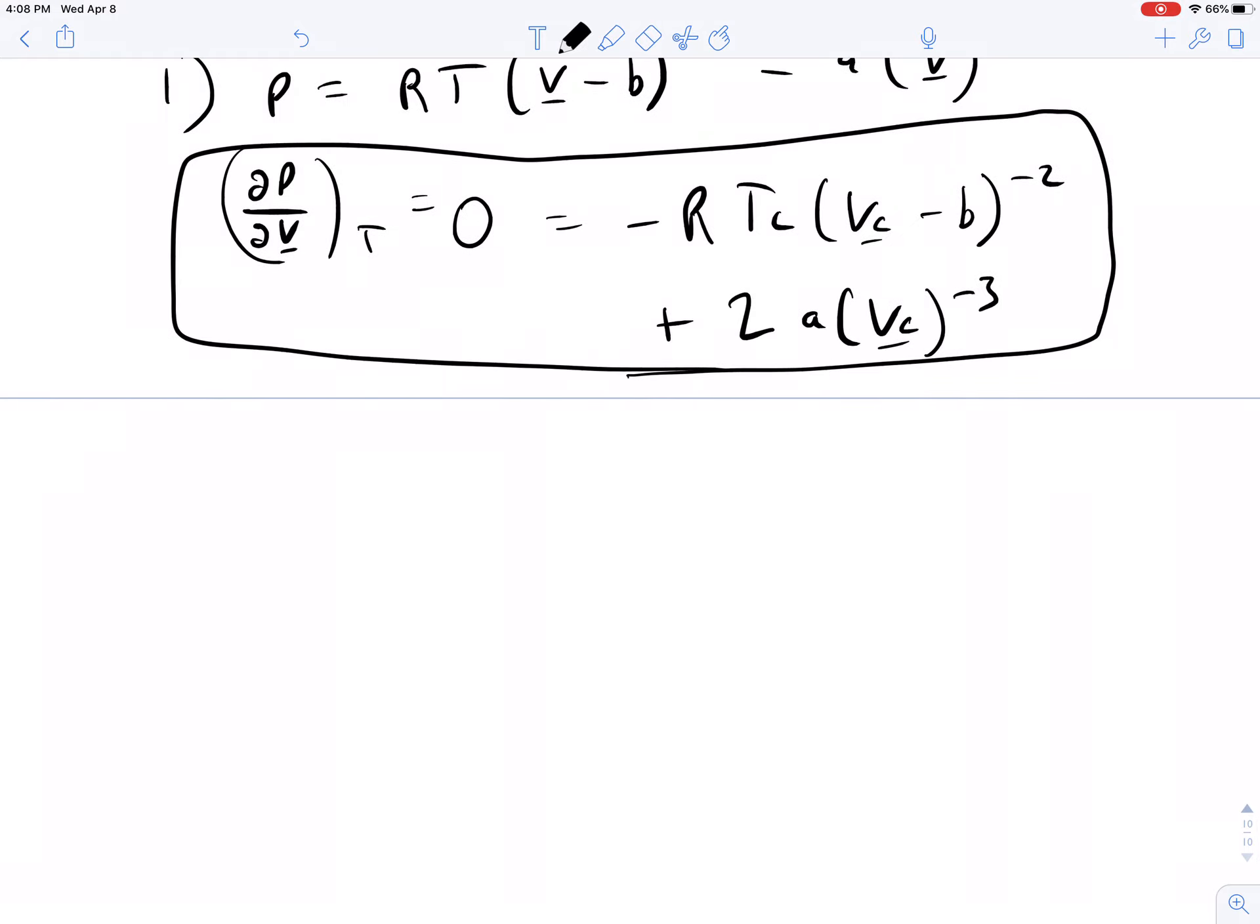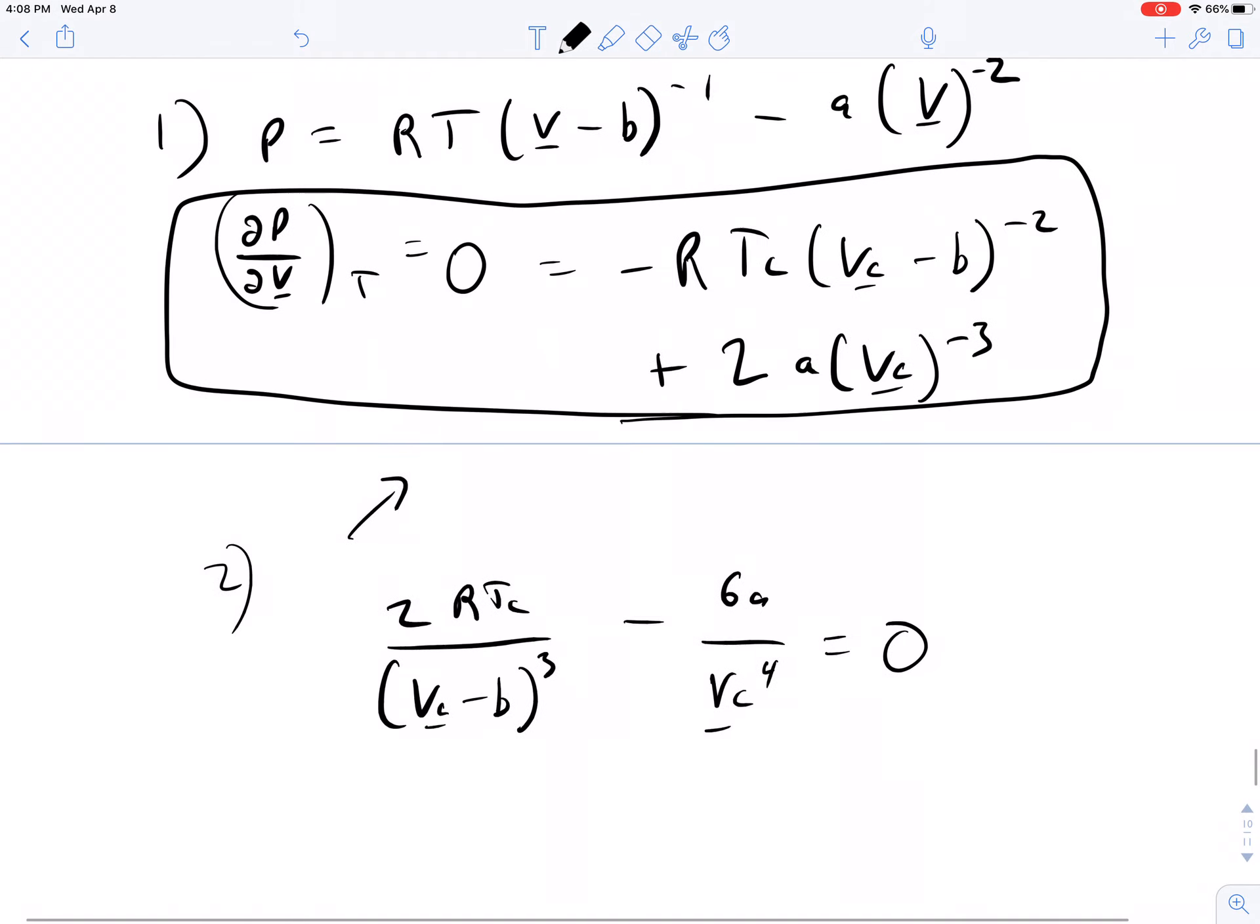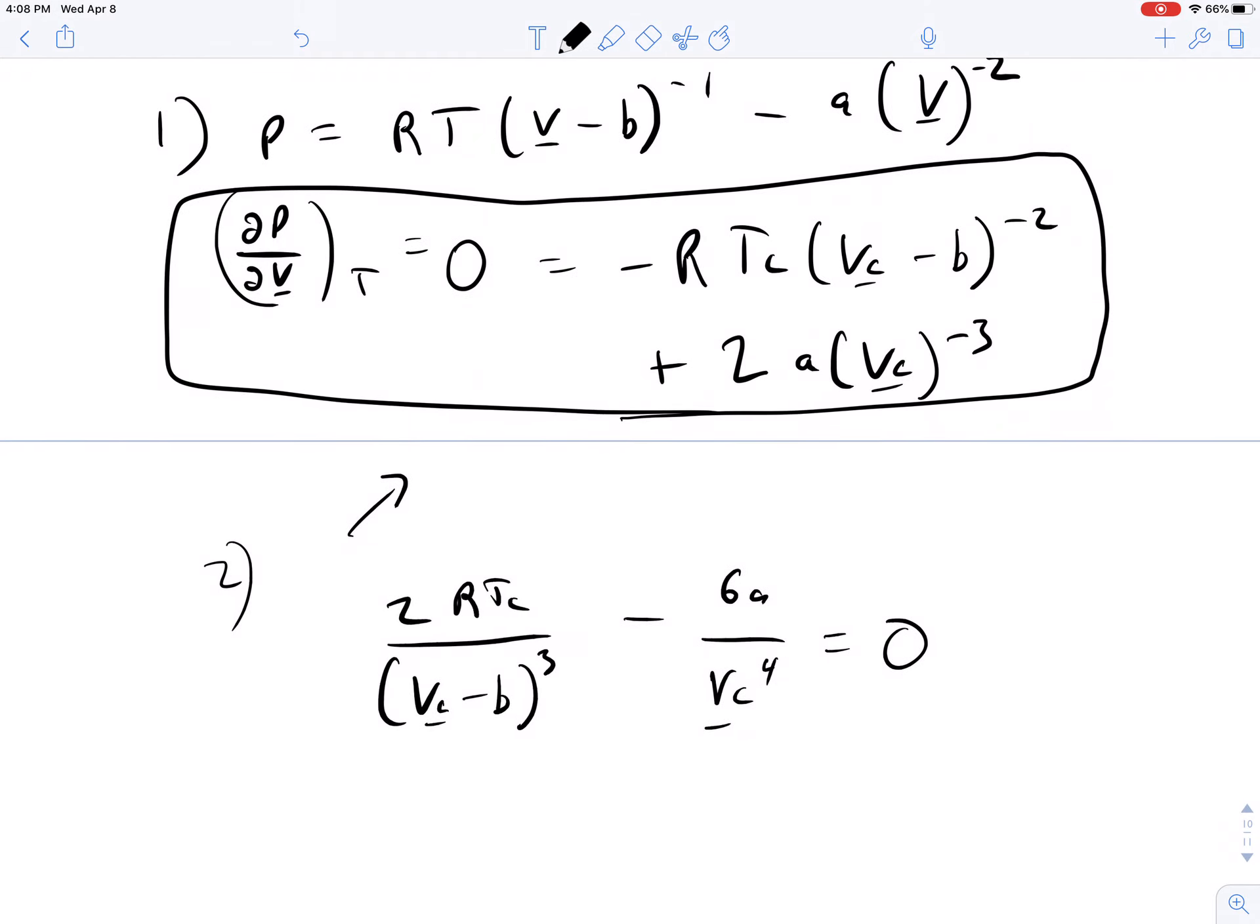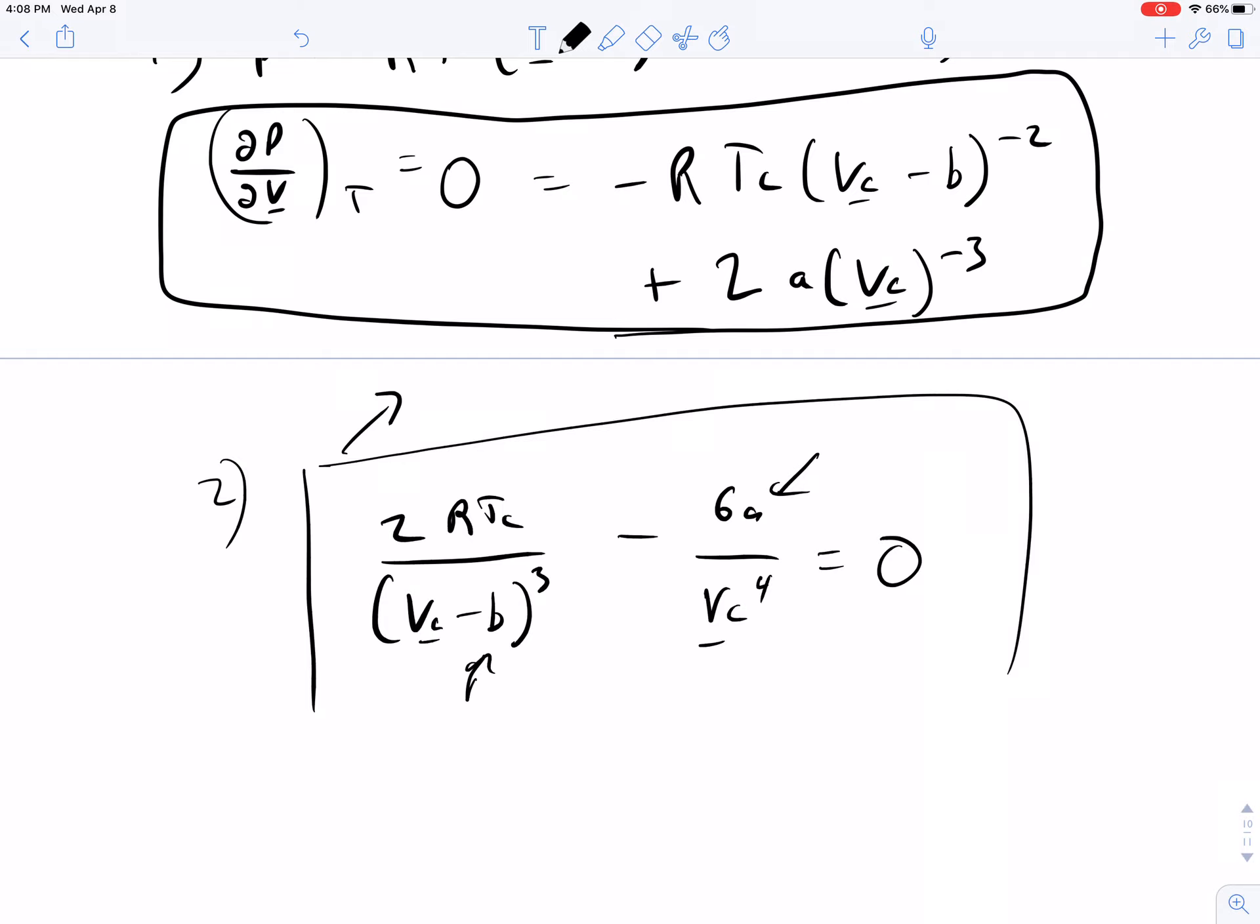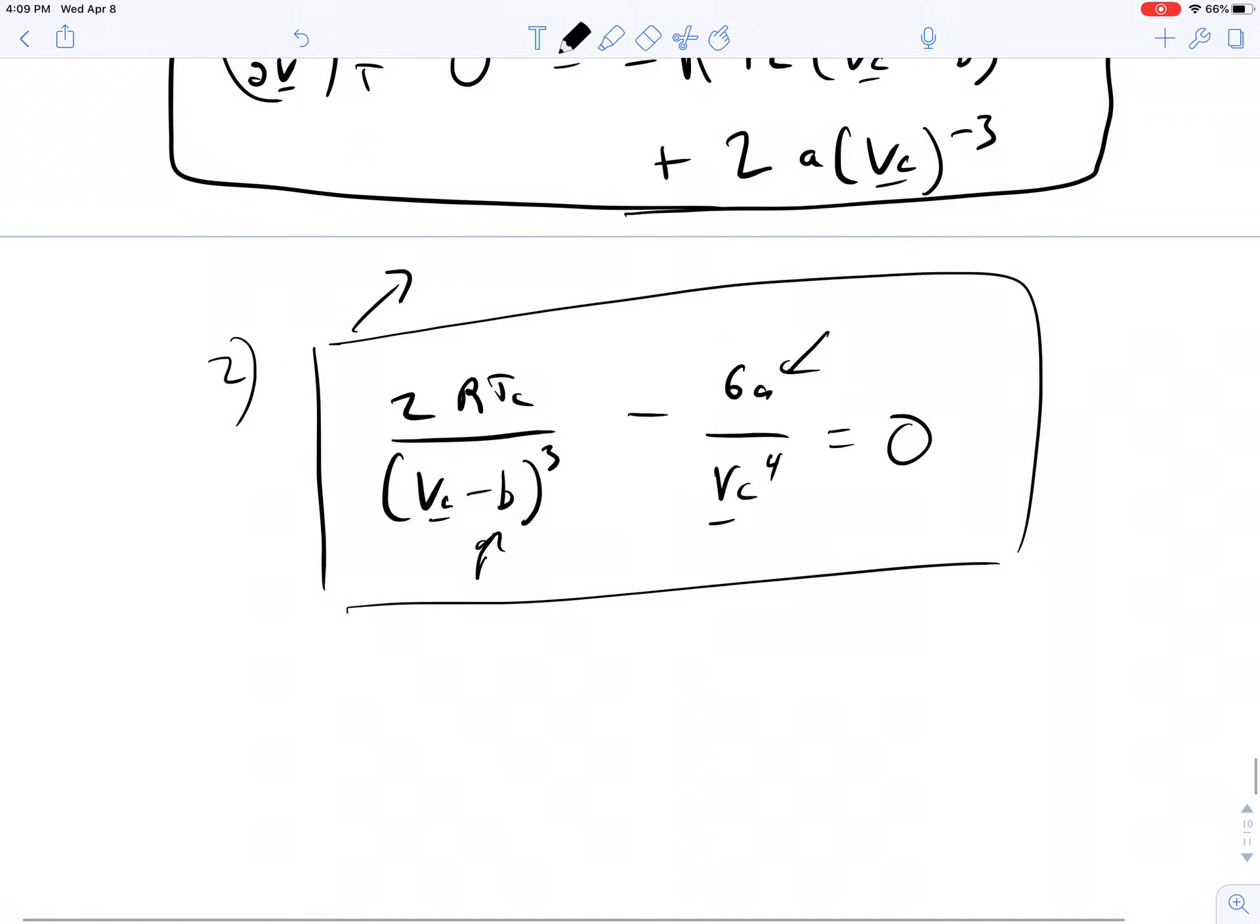What does the second derivative tell us? The next one gives us one more derivative. Starting from this one, take the derivative again, we end up with 2RTC divided by VC minus B to the cubed minus 6A over VC to the fourth equals zero. So both of these, we don't need the pressure term, and we're trying to solve for A and for B. We have two equations, the pressure dropped out by substitution, and we can derive what A and B are.